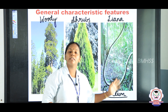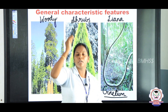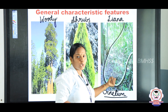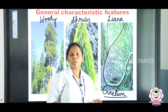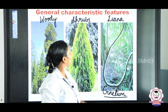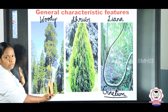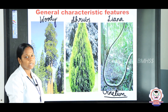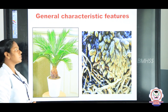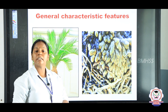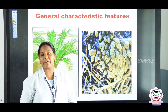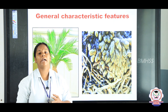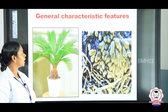Lianas are rooted but they climb other trees for photosynthesis. So lianas are rooted but depend on other plants for climbing. We have studied about the three types of gymnosperms: some are woody, some are shrubs, and some are lianas. The majority phase of gymnosperms is sporophyte, and they possess root, stem, and leaves.